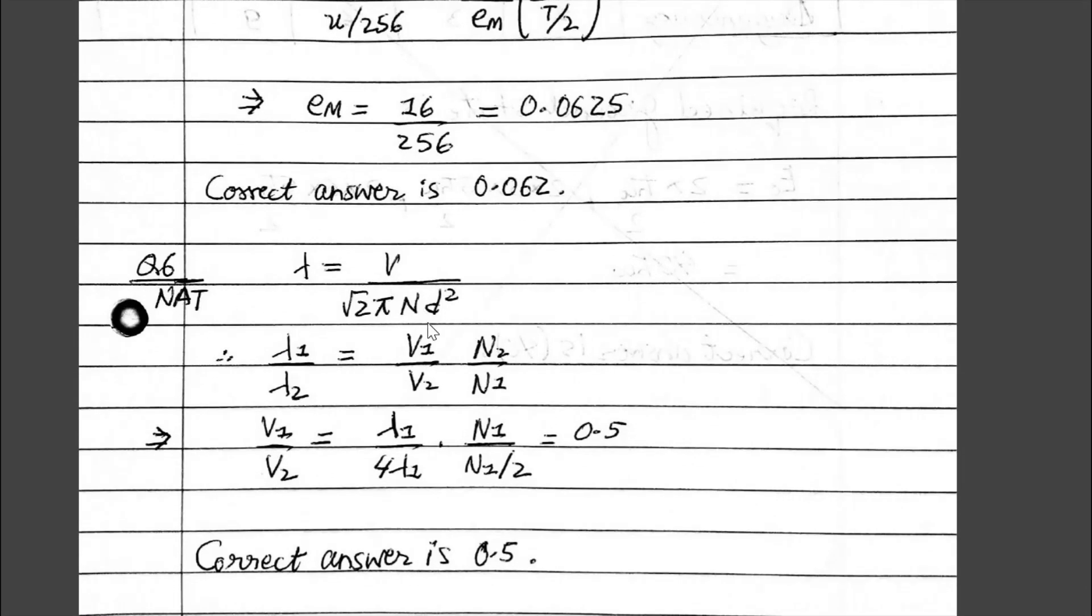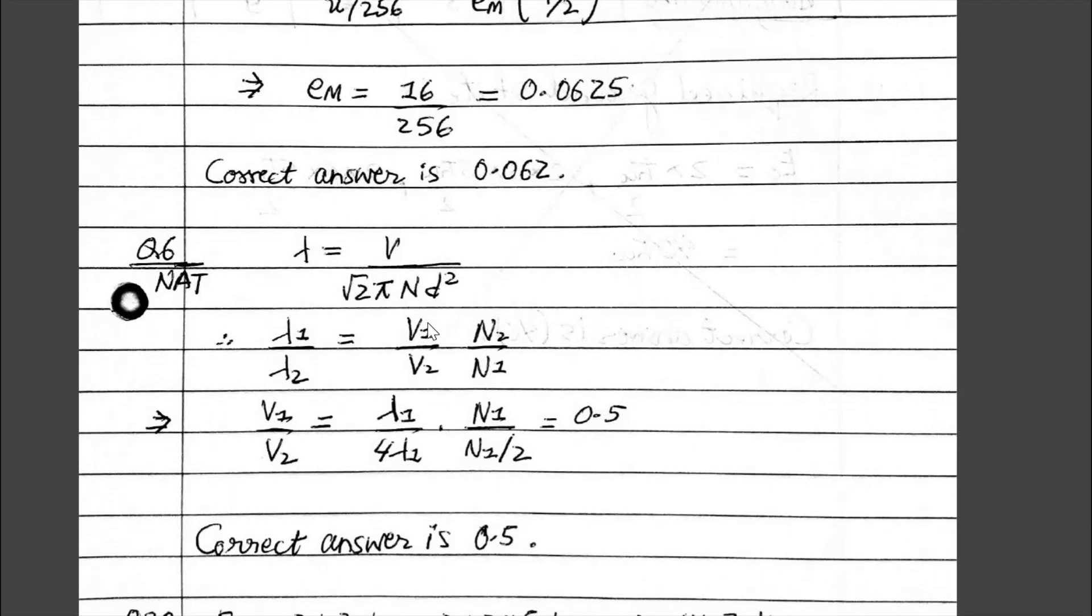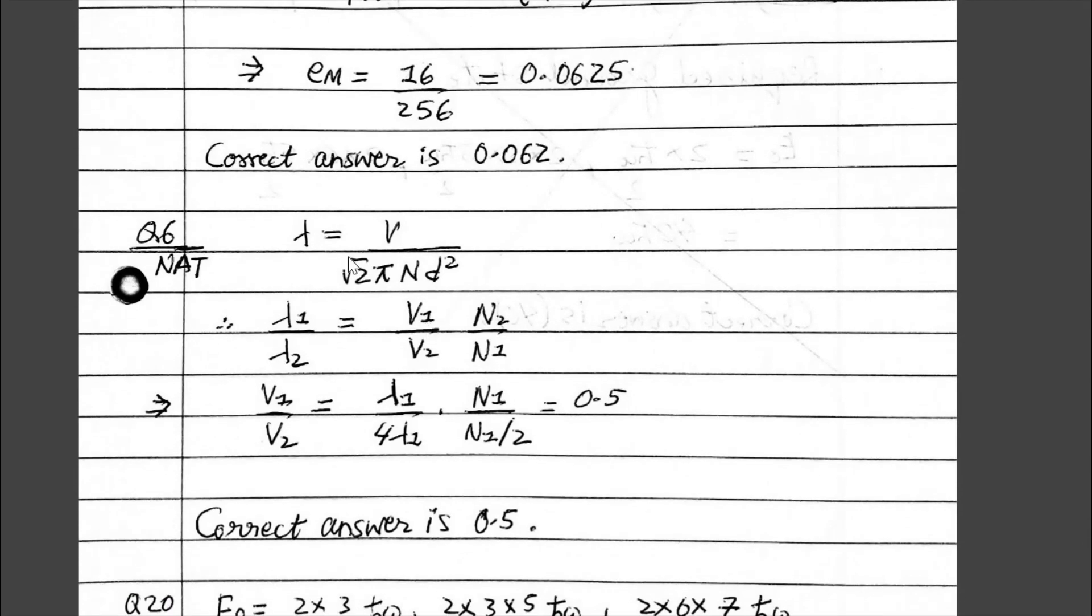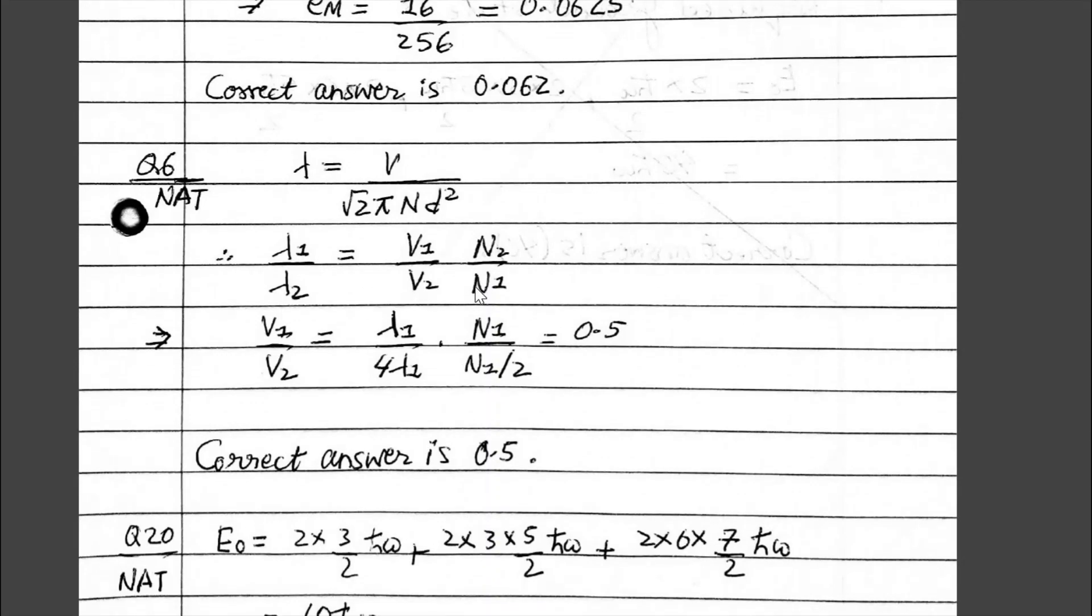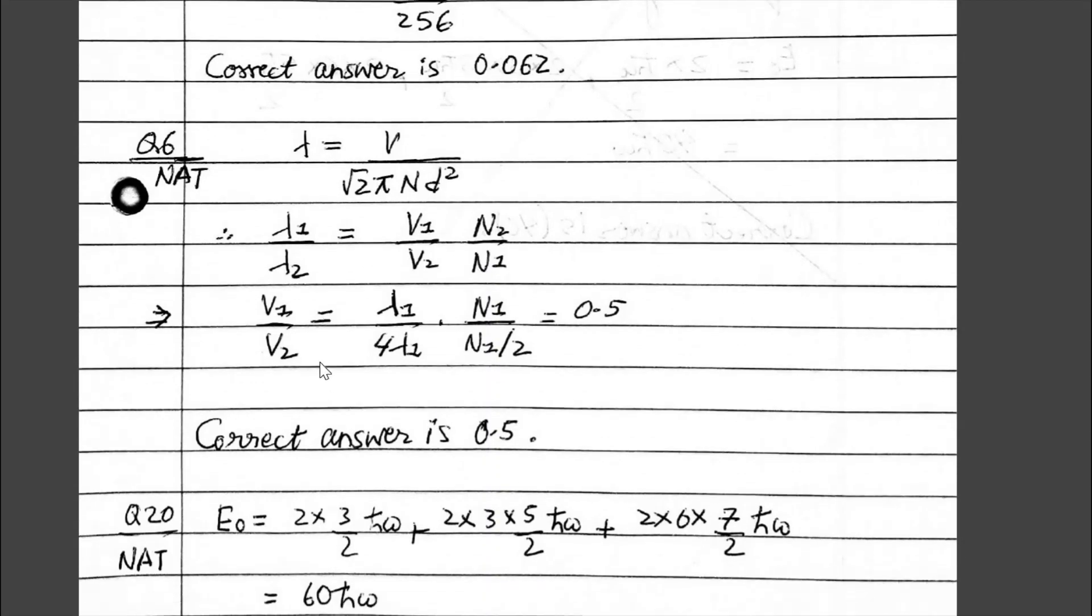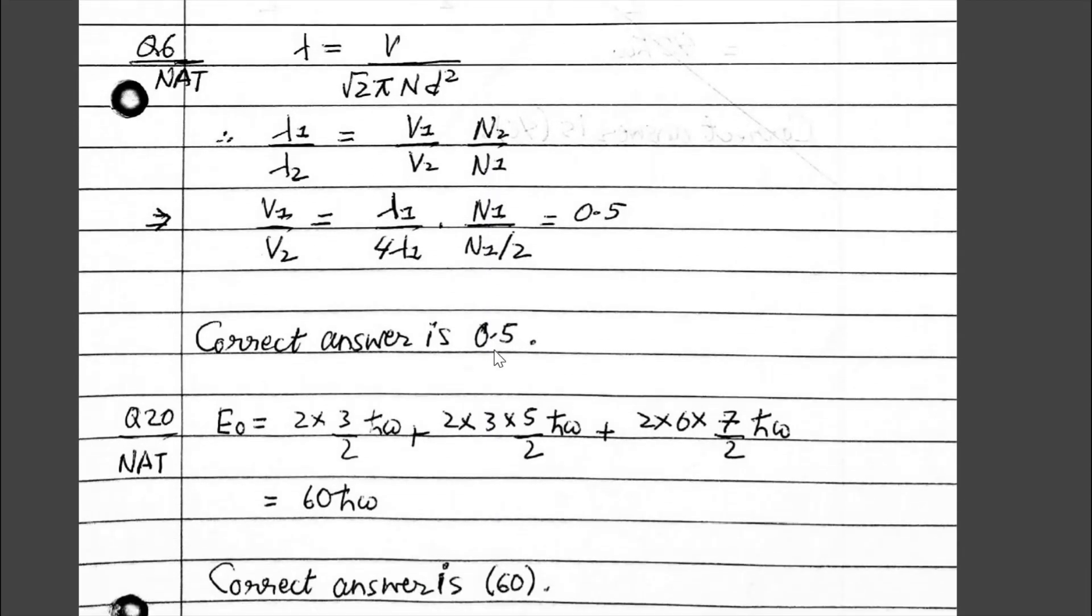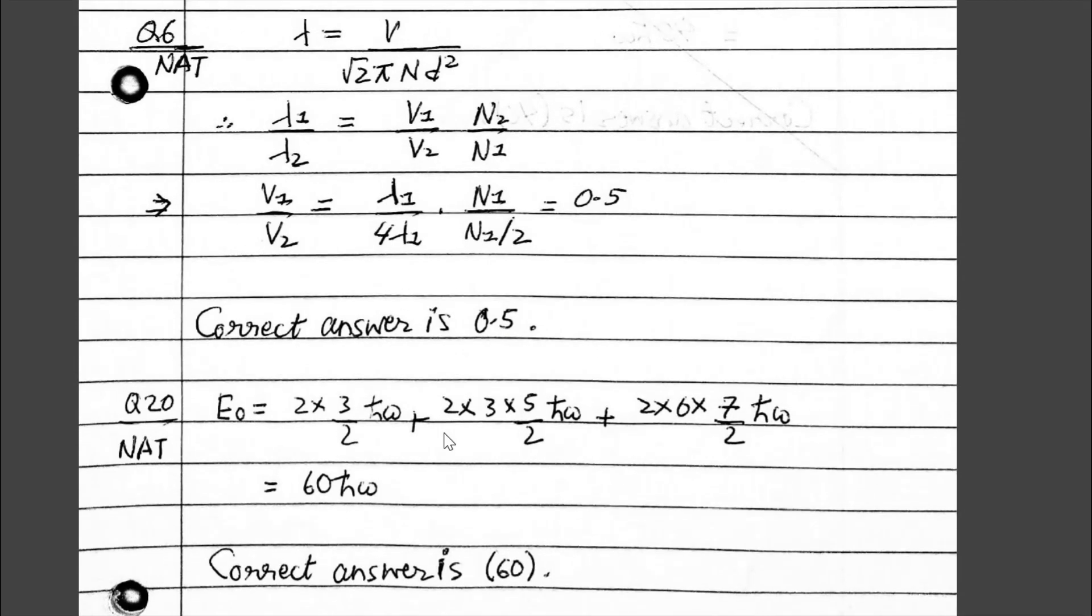The sixth question from NAT is also related to thermodynamics, basically kinetic theory of gases, related to mean free path. Lambda equals V over root pi N d squared. Here we need to find the ratio V1 by V2. The correct answer is 0.05.